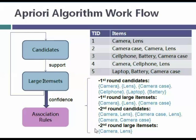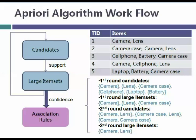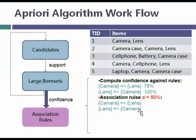The second step is to calculate confidence to generate the association rules. The only interesting large item set is camera and lens. We calculate the confidence for the rule camera → lens, which is 75%, and for lens → camera, which is 100%. With a minimum confidence of 50%, both rules qualify as association rules generated by the APRU algorithm.